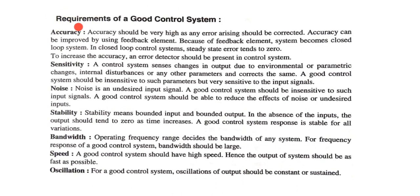Now we discuss what is the requirement of a good control system. These are the basic requirements of a good control system: accuracy, sensitivity, noise, stability, bandwidth, speed, and oscillation. Now we will discuss all these terms in detail.